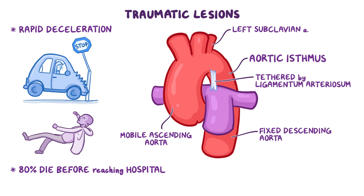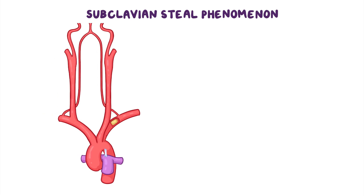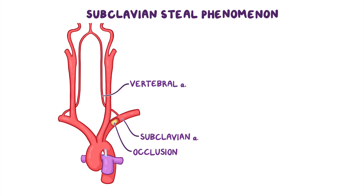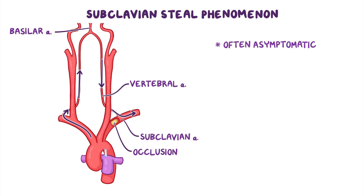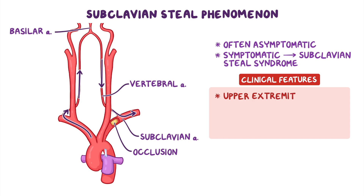Just before we wrap up, let's quickly look at subclavian steal phenomenon. With subclavian steal phenomenon, the vertebral artery on the same side as an occluded or blocked subclavian artery steals blood from the contralateral subclavian artery circulation. This happens when the occlusion is proximal to the vertebral artery, so blood from the contralateral vertebral artery flows to the basilar artery and then continues as retrograde flow through the ipsilateral vertebral artery. This allows blood flow to the area supplied by the occluded subclavian vessel and is often asymptomatic. When subclavian steal becomes symptomatic, it is considered subclavian steal syndrome. Symptoms include upper extremity ischemia and neurological symptoms such as dizziness or vertigo.